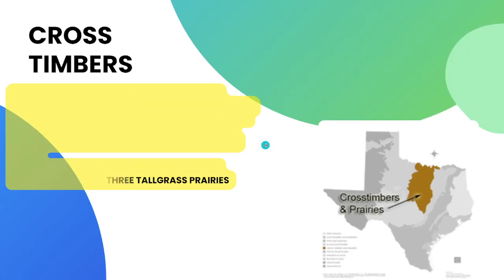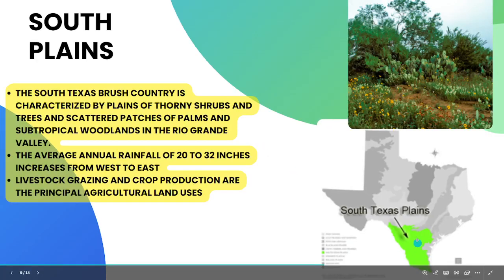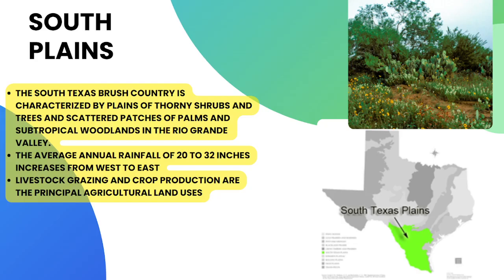The South Plains region lies towards the south of Texas near the Rio Grande River. The South Texas brush country is characterized by plains of thorny shrubs and trees and scattered patches of palms and subtropical woodlands in the Rio Grande Valley. The average annual rainfall of 20 to 32 inches increases from west to east. Livestock grazing and crop production are the principal agricultural land uses.